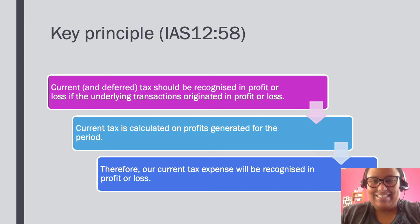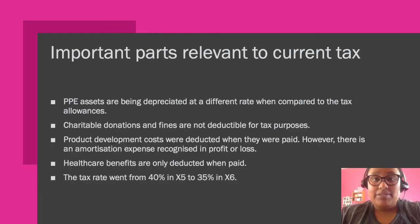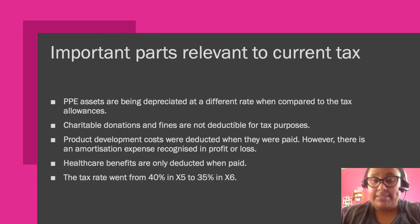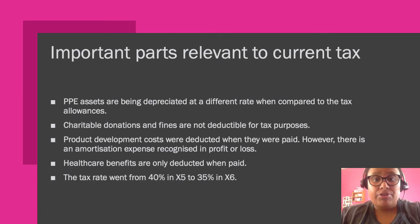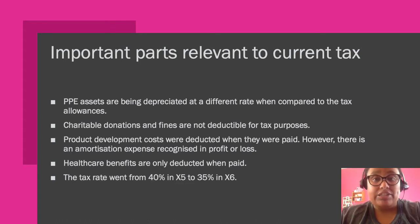In illustrative example 2, the important parts relevant to current tax are as follows. First, PPE assets are being depreciated at a different rate compared to the tax allowances. That means from an accounting perspective we are depreciating our assets very differently to the way the revenue authorities are giving us deductions or allowances, so we need to take those adjustments into account when calculating current tax expense.